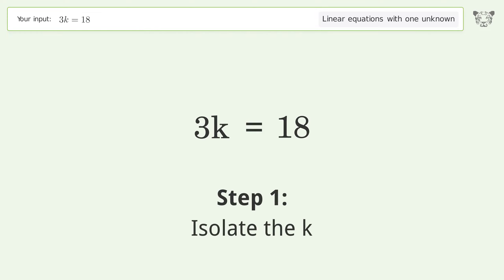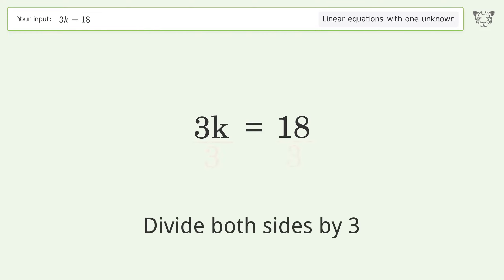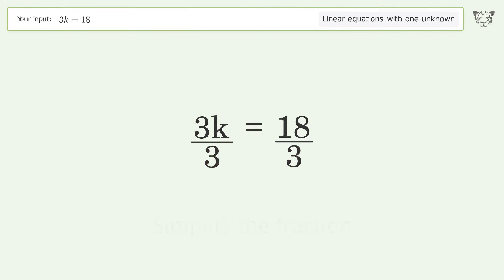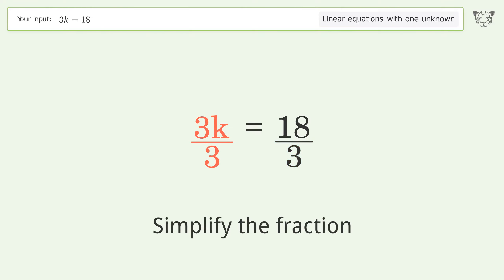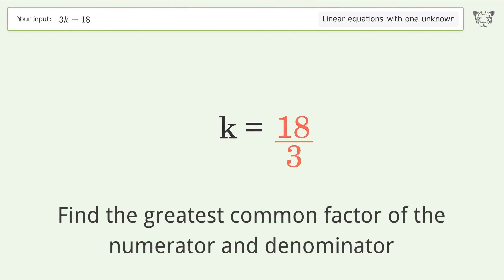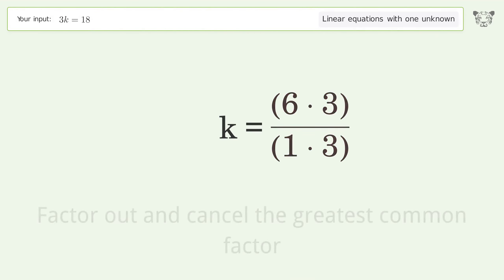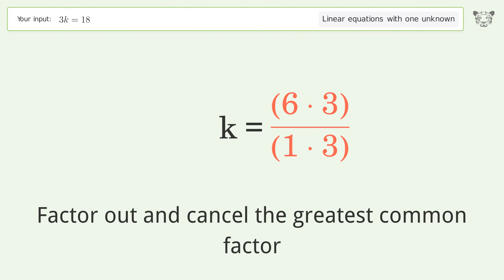Isolate k by dividing both sides by 3. Simplify the fraction by finding the greatest common factor of the numerator and denominator, then factor out and cancel the greatest common factor.